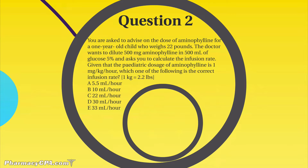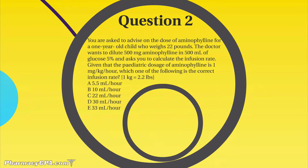Question two: you're asked to advise on the dose of immunophyllin for a one-year-old child who weighs 22 pounds. You need to know your imperial weights and the conversion — one kilogram equals 2.2 pounds. The doctor wants to dilute 500 milligrams of immunophyllin in 500 mils of glucose five percent and asks you to calculate the infusion rate. The pharmacist is going to do the hard work there, given that the pediatric dose of immunophyllin is one milligram per kilogram per hour.